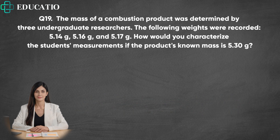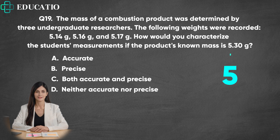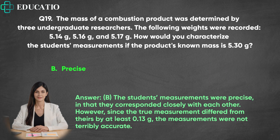Question 19. The mass of a combustion product was determined by three undergraduate researchers. The following weights were recorded: 5.14 grams, 5.16 grams, and 5.17 grams. How would you characterize the students' measurements if the product's known mass is 5.30 grams? A. Accurate. B. Precise. C. Both accurate and precise. D. Neither accurate nor precise. Answer: B. The students' measurements were precise in that they corresponded closely with each other. However, since the true measurement differed from theirs by at least 0.13 grams, the measurements were not terribly accurate.